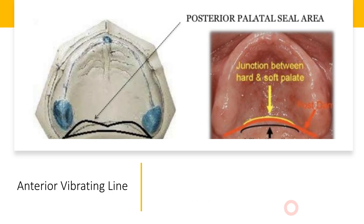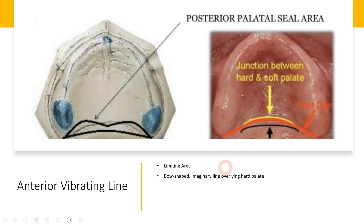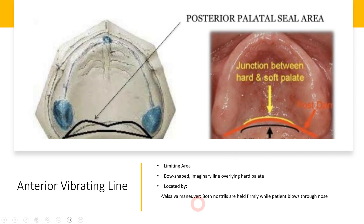We also have the anterior vibrating line. As you can see in this clinical picture, it's a limiting area that is bow-shaped. It's an imaginary line present close to the hard palate, located by the Valsalva maneuver — where we ask the patient to hold both nostrils firmly and blow through their nose. When this happens, the area is slightly elevated, helping us recognize the anterior vibrating line. Another way is to ask the patient to produce the 'ah' sound, which also helps delineate where the anterior vibrating line is present.